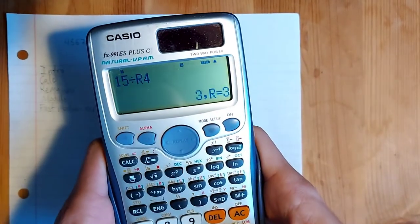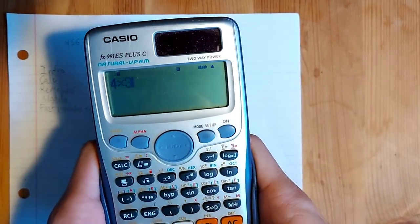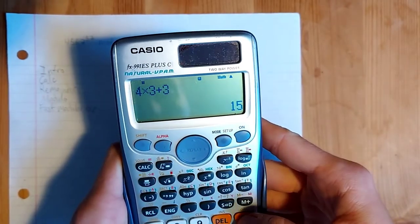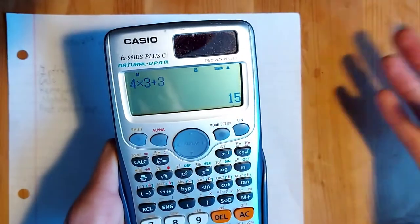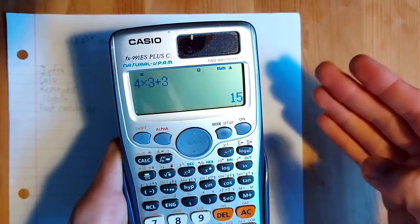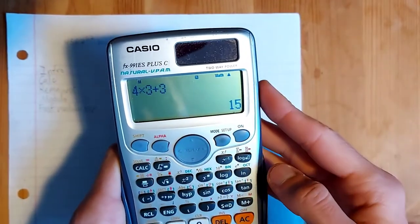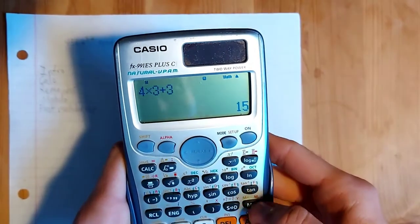And so if we do four times three plus three, we get 15. So it basically does integer division, similar to the double slash in Python, for example. And then it'll also give you the remainder.